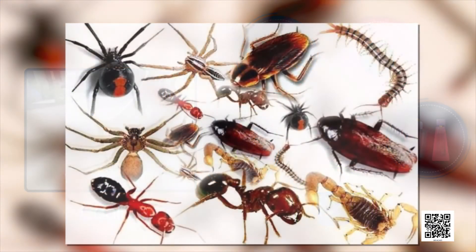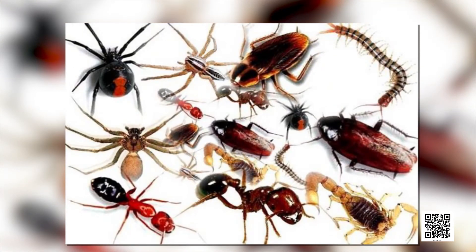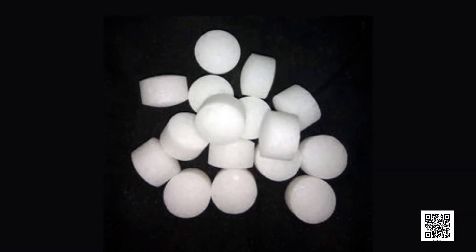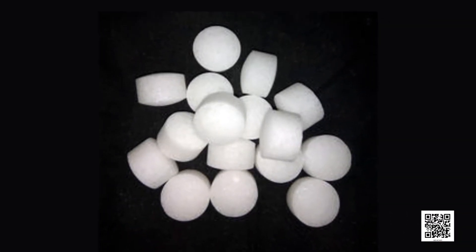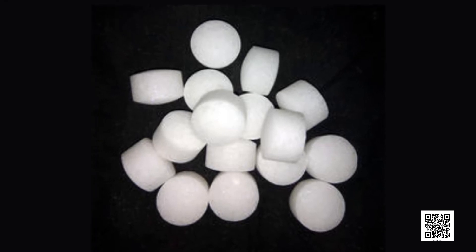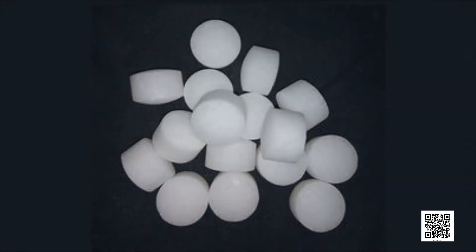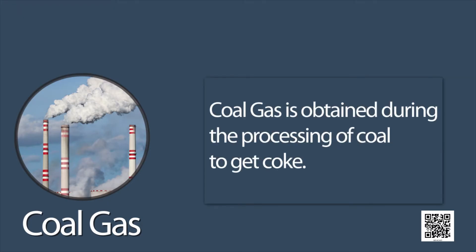Interestingly, naphthalene balls used to repel moths and other insects are also obtained from coal tar. Another useful product obtained during the processing of coal is coal gas. Coal gas is obtained during the processing of coal to get coke, and it is used as a fuel in many industries situated near the coal processing plants.